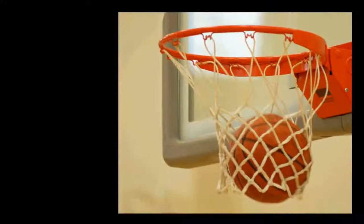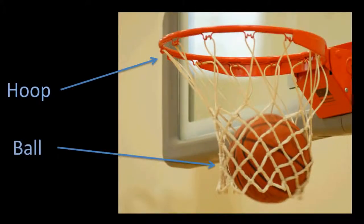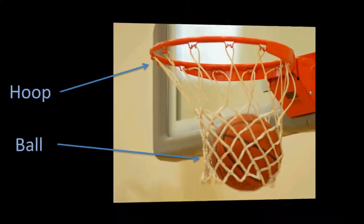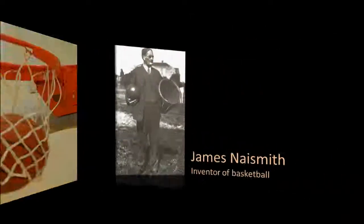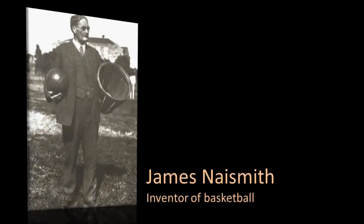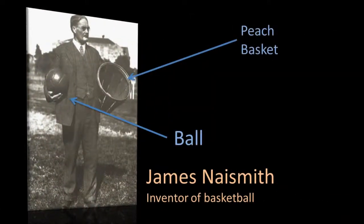There are two main items that you need to play a game of basketball, and they are a hoop and a ball. Or if you're old-school, a ball and a peach basket, like they used to use back in the day. But sooner or later, as you become more competitive and games get more organized, you will encounter a basketball court.